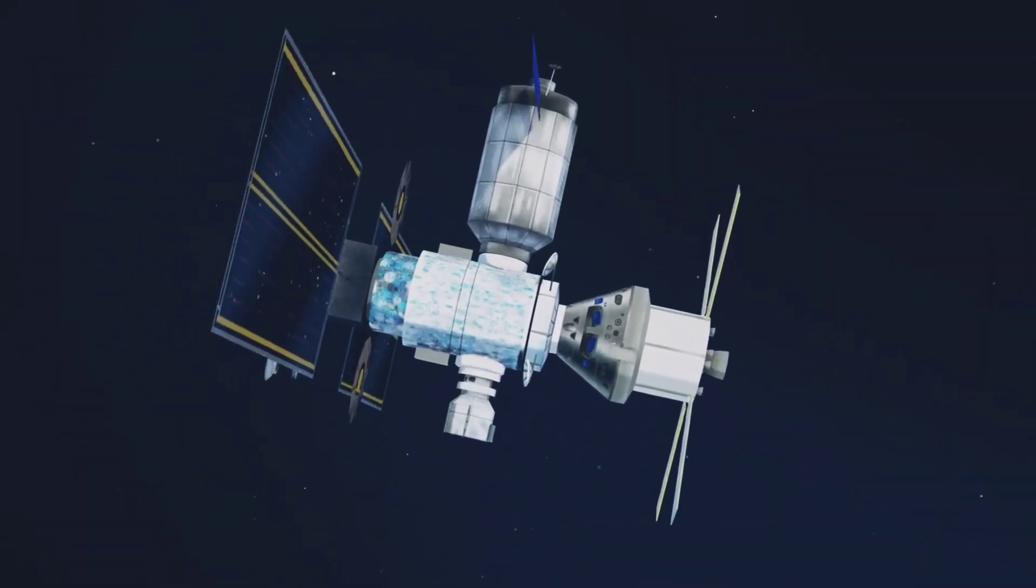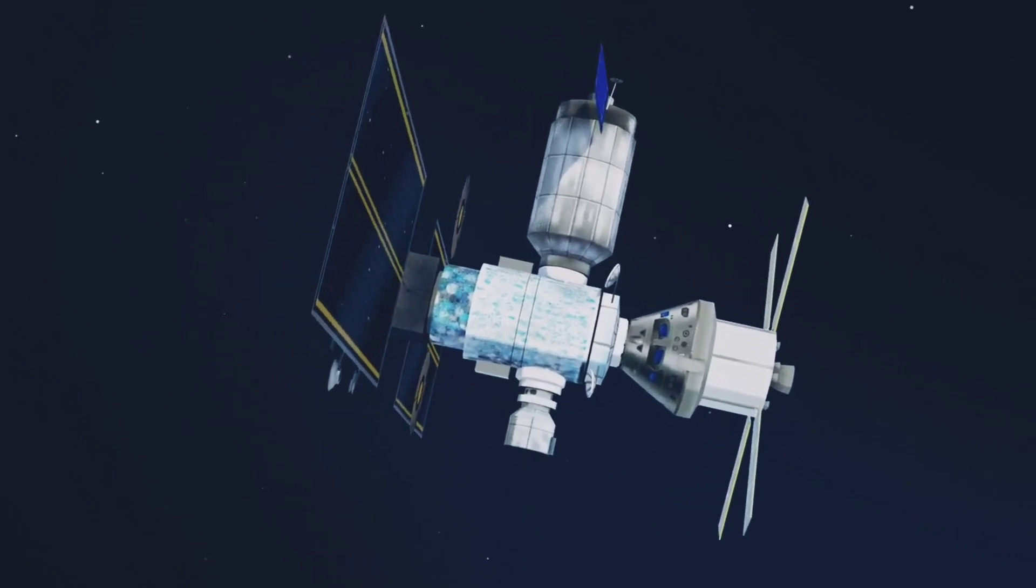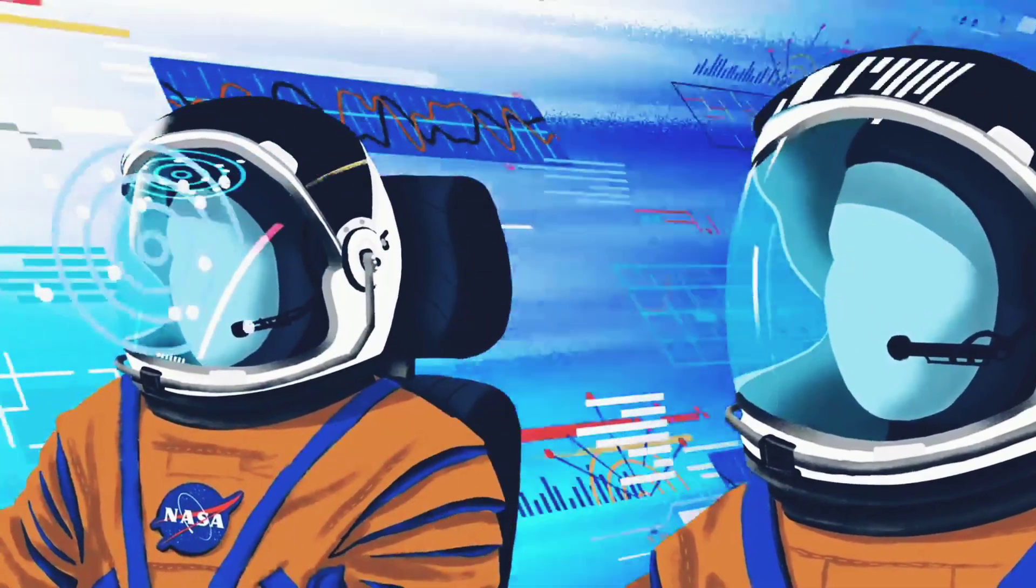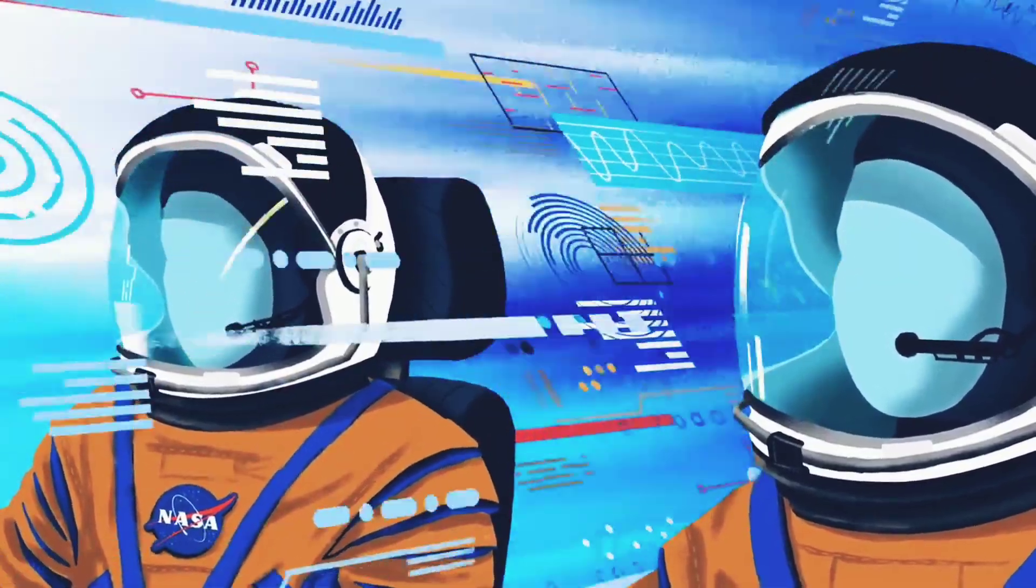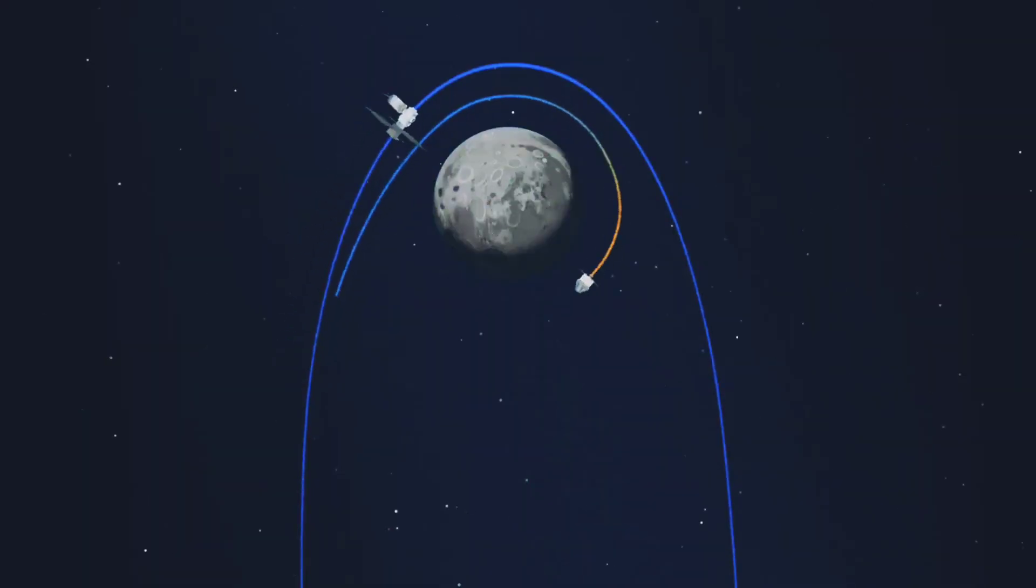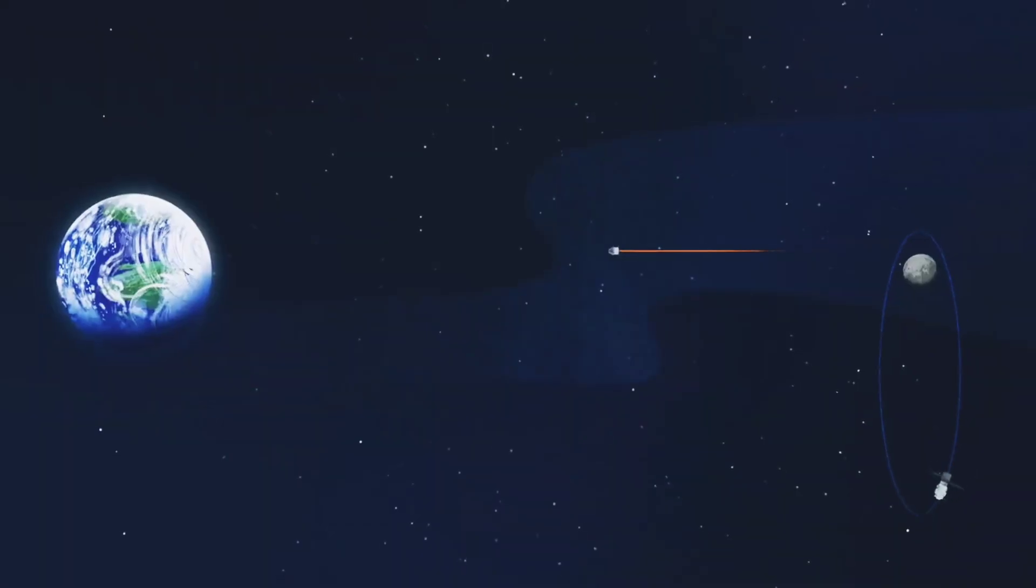Once back aboard the Orion spacecraft and undocked from Gateway, the crew fire their engine once to break out of the halo orbit, and once again to sling the spacecraft around the Moon, placing it on a multi-day trajectory back towards Earth.